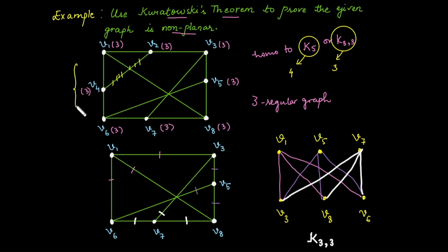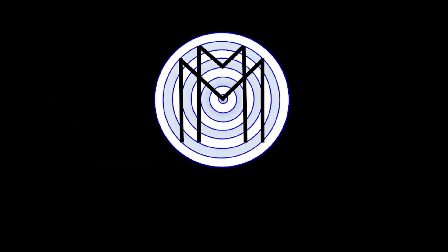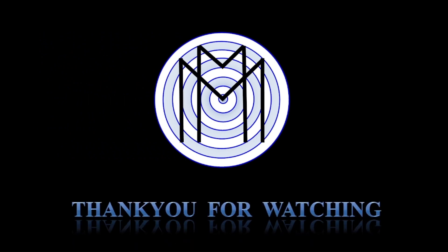We can conclude that this graph is non-planar with the help of Kuratowski's theorem, which states that a graph is non-planar if it has a subgraph homeomorphic to the complete bipartite graph K3,3.